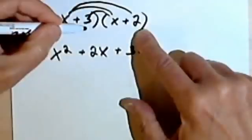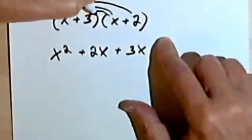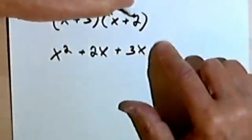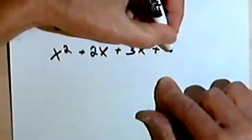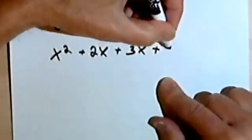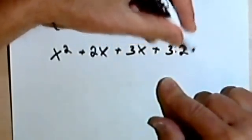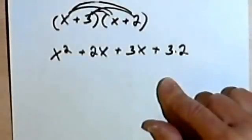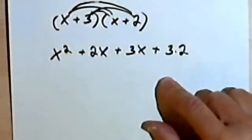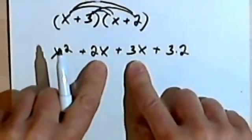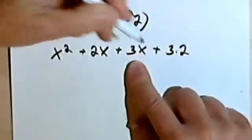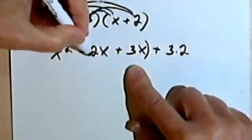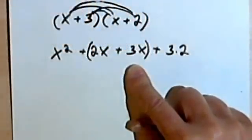And then we multiply the last two terms together. We have 3 times 2. And I'm going to just write that as 3 times 2. And then remember, we're going to combine the two middle terms. What I'm going to do here is just show that we're combining them by putting that in parentheses.